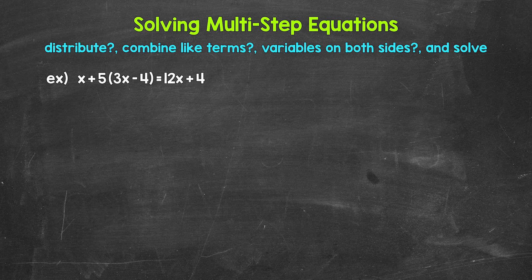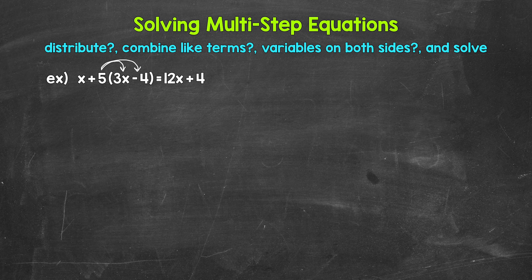Let's start with the first thing we're going to do, and that is to look for an opportunity to use the distributive property to remove any parentheses. Do we have any parentheses we can remove? Yes — we can use the distributive property to remove the parentheses around three x minus four. We need to distribute five, and that's a positive five, to three x and negative four.